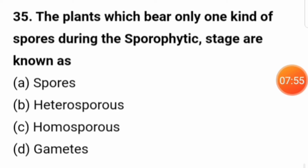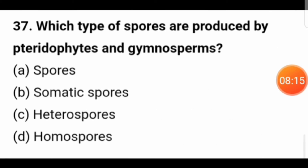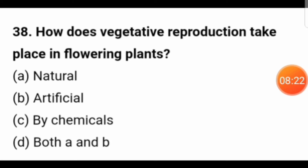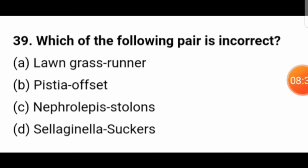The plant which bears only one kind of spore during the sporophytic stage is known as homosporous. The plant which bears two types of heterospores during the sporophytic stage is known as heterosporous. Which type of spores are produced by pteridophytes and gymnosperms? Heterospores. How does vegetative reproduction take place in flowering plants? In flowering plants, vegetative reproduction takes place either naturally or artificially. Which of the following pair is incorrect? The incorrect pair is Selaginella-sucker; in Selaginella, tubers are the vegetative propagules, not suckers.